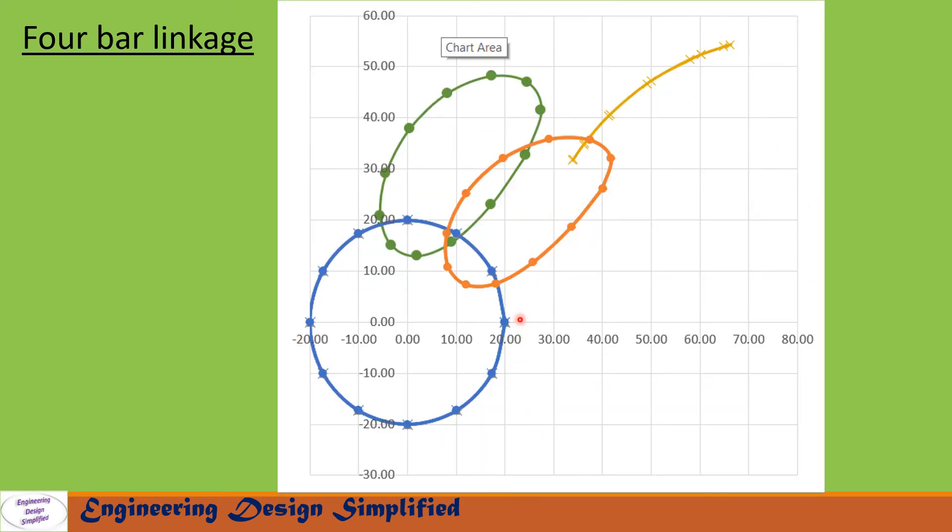In this graph, the blue circular curve shows Bx and By, the crank position for 0 to 360 degrees. This curve shows Cx and Cy (L4x, L4y), the follower position on the XY plane.